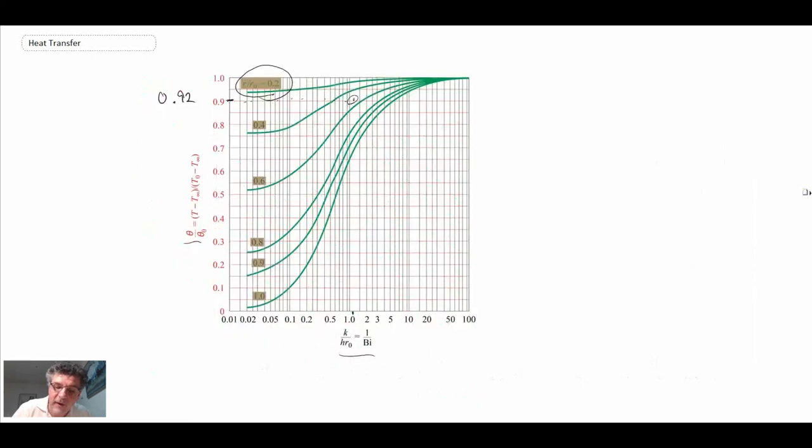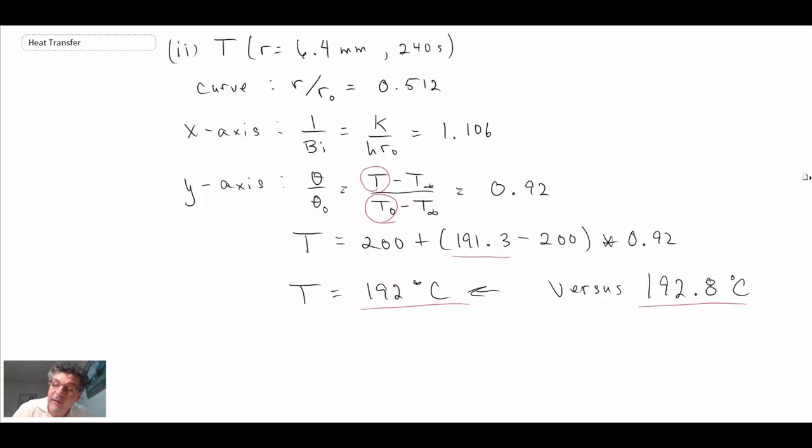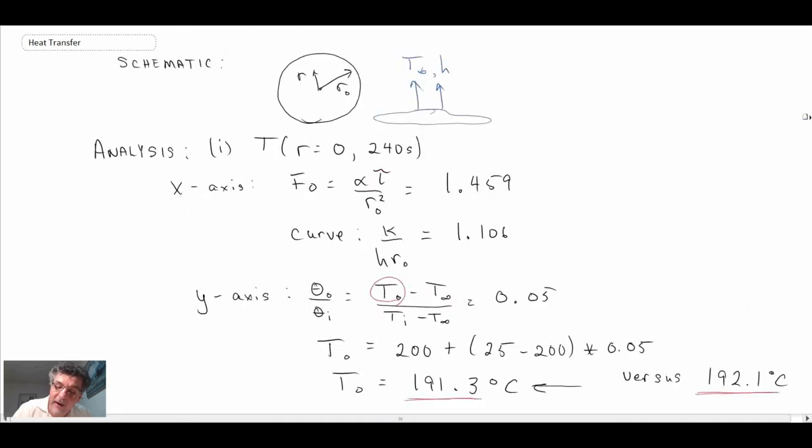For either the centerline temperature or the spatial temperature. But when we compare the results, it's really not too bad. So anyways, that gives you an example of transient conduction analysis with convective environments for a sphere, one of the three different shapes that we can look at. And that is covering everything that we're going to look at with transient analysis and heat transfer.